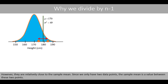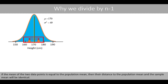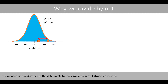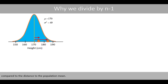Since we only have two data points, the sample mean is a value between these two points. If the mean of the two data points equals the population mean, then their distance to the population mean and the sample mean will be identical. When we draw two random individuals, the sample mean is unlikely to correspond to the population mean, especially for small samples.